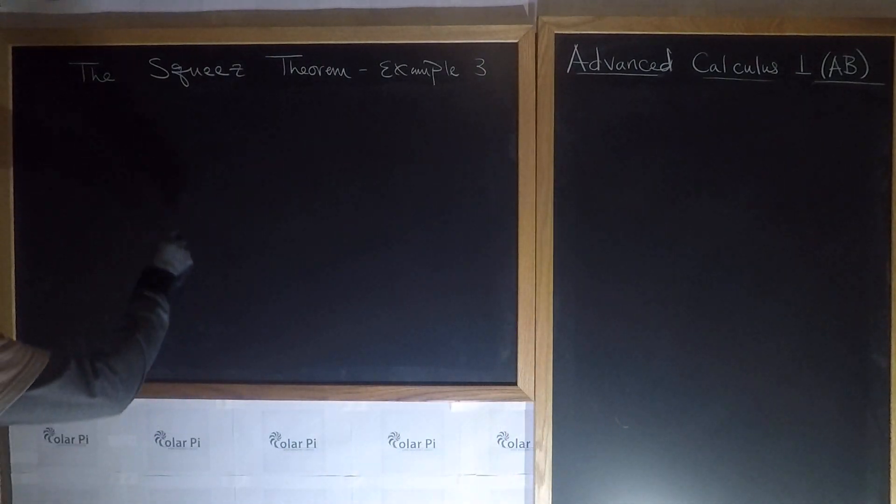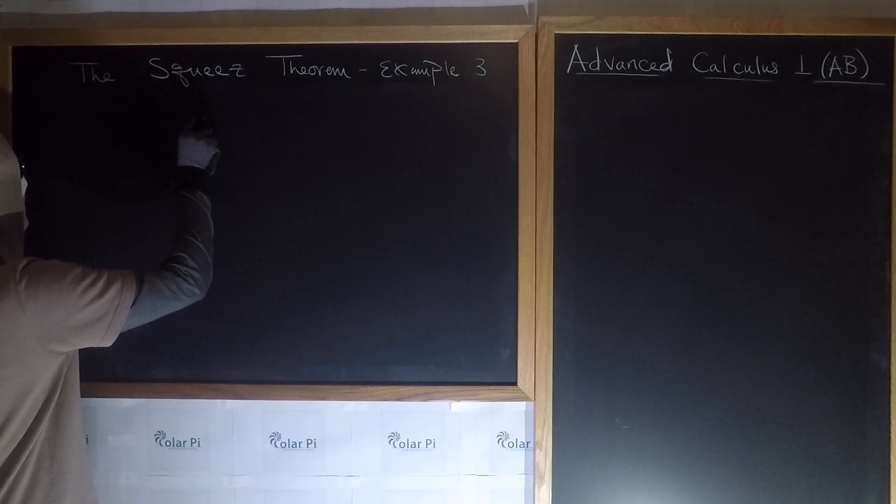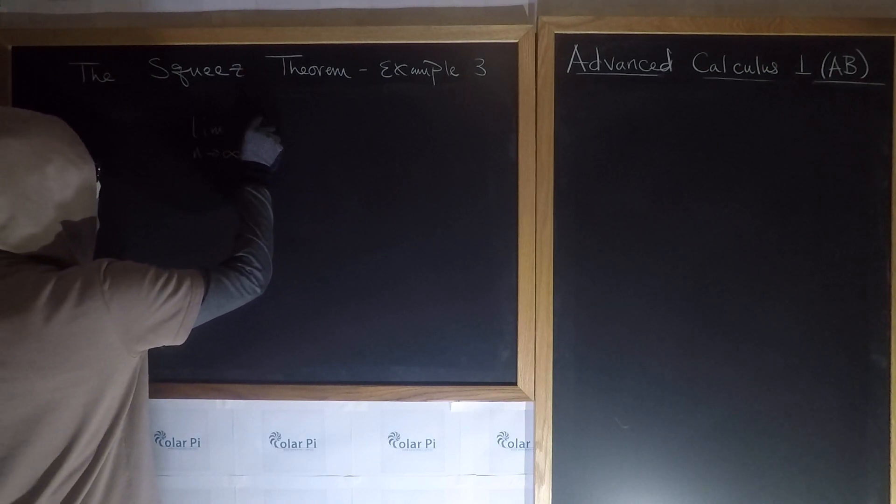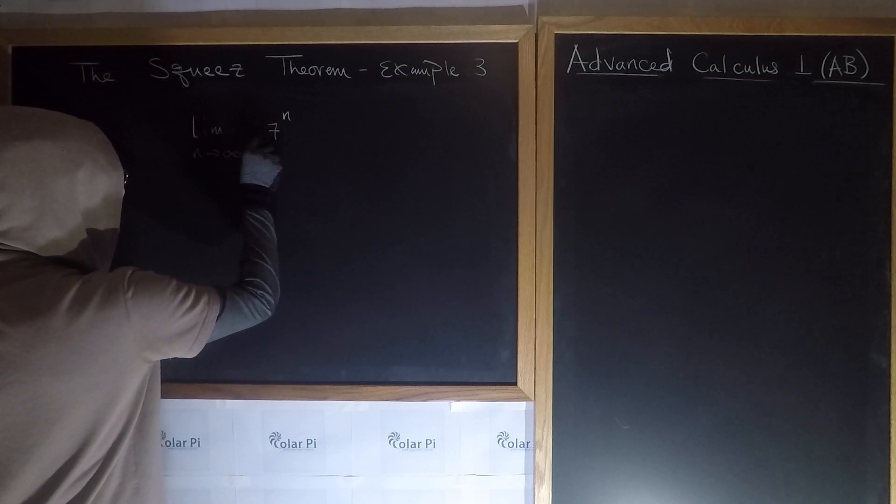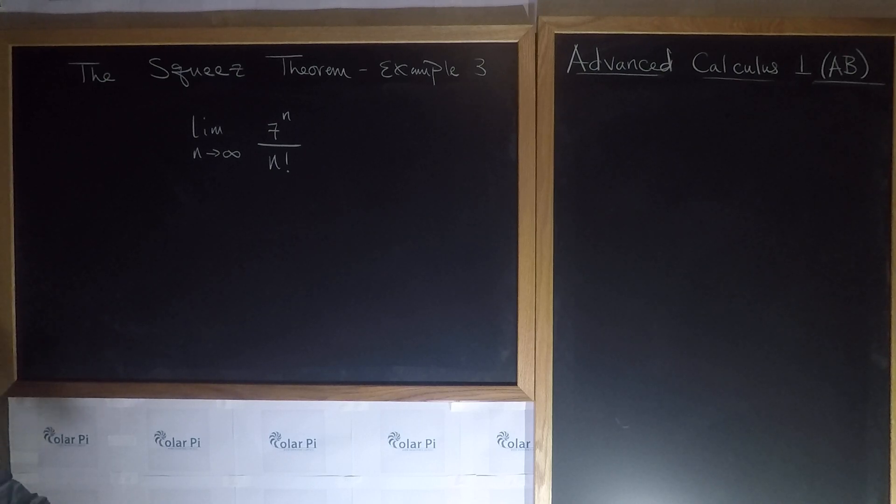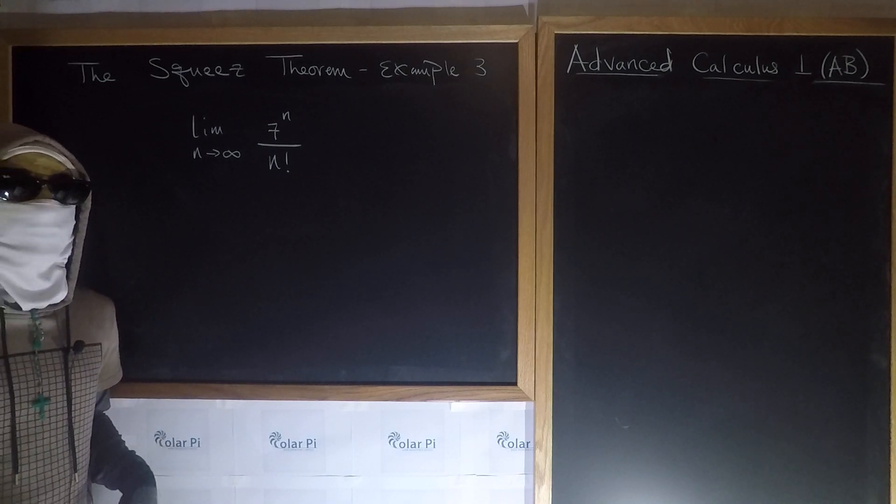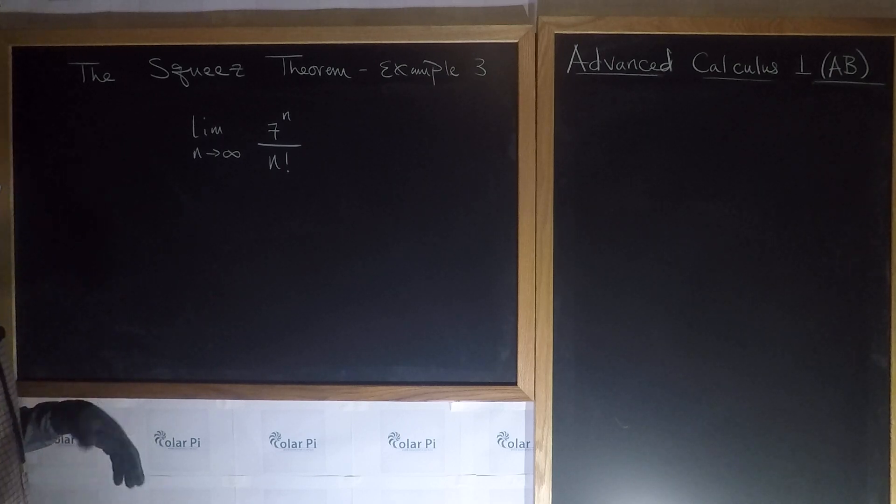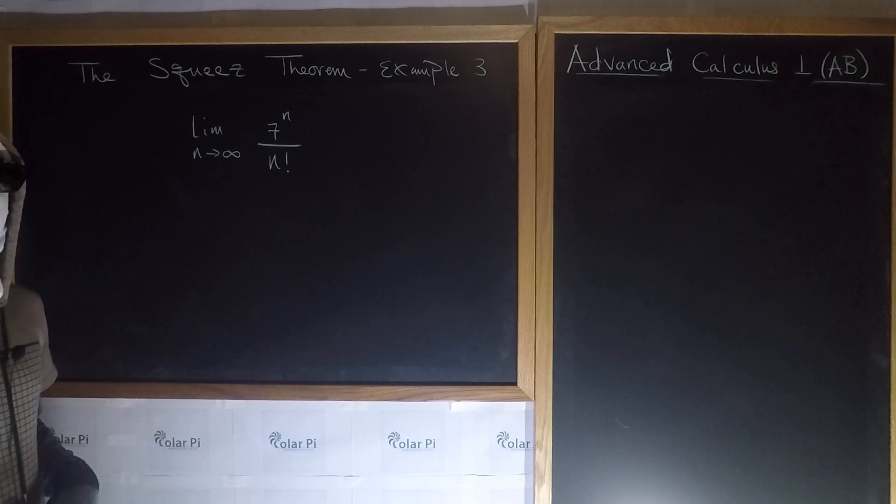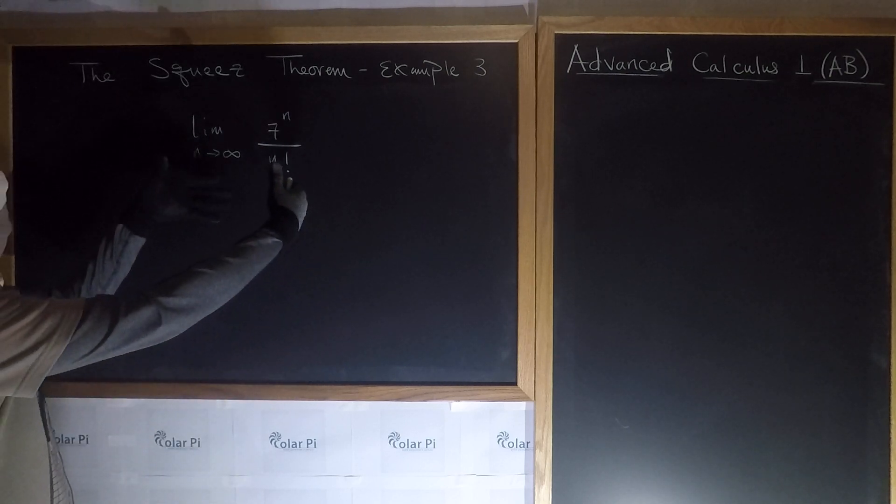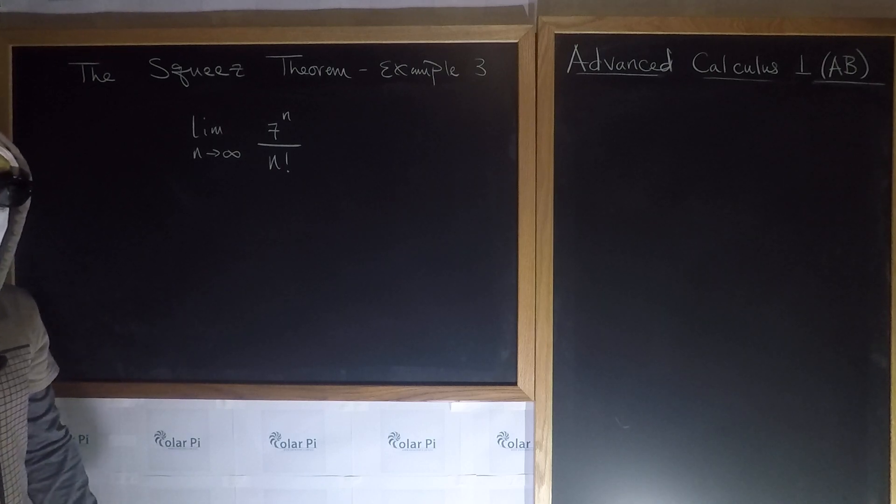So this is example three, and in this example, we're going to look at this limit: lim as n goes to infinity of 7 to the n over n factorial. Now you don't have to use the squeeze theorem to prove this limit, or to show what it is. But here, of course, we're using the squeeze theorem, so we need to figure out how to squeeze this 7 to the n over n factorial.